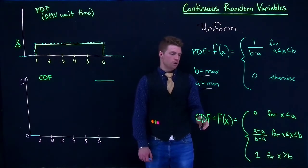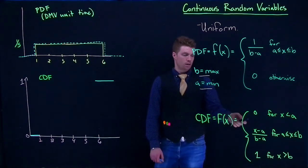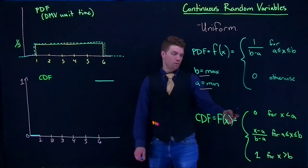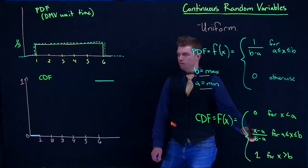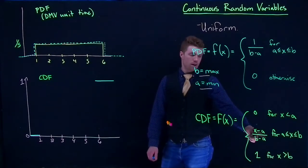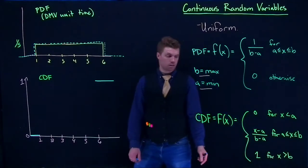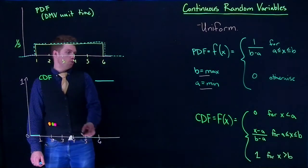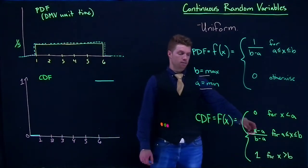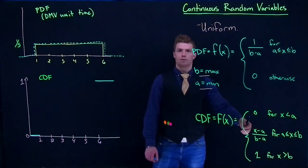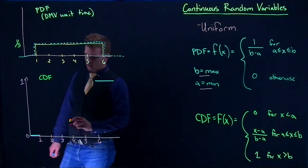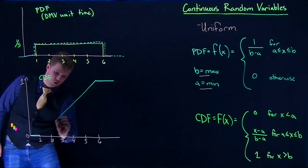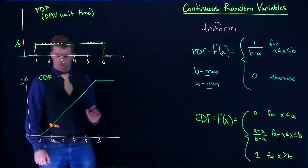For this cumulative density function, we can graph this. If we had the value of a, in our case is one, it'd be one minus one is zero divided by six minus one, and it would be zero. If we did two, it would be one divided by five. We did three, it'd be two divided by five, etc. So for this guy, we wind up getting a straight line from our one to our zero.